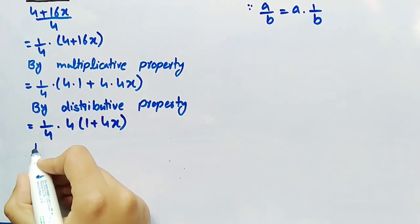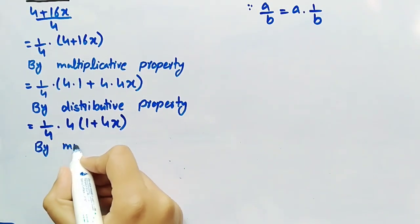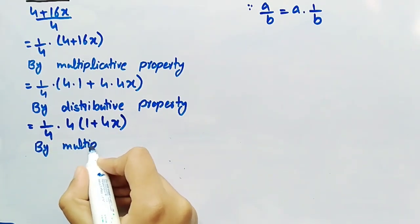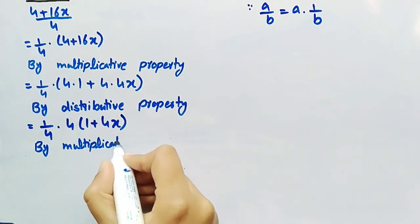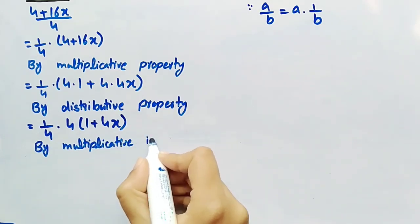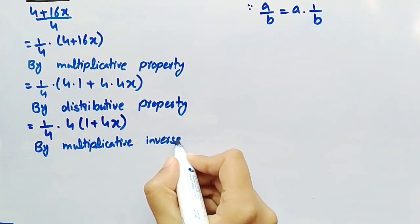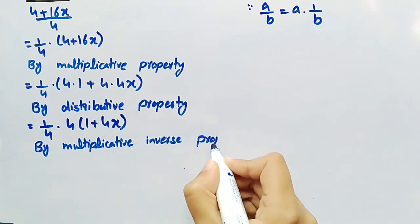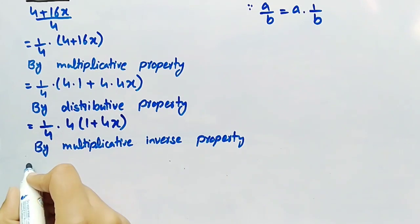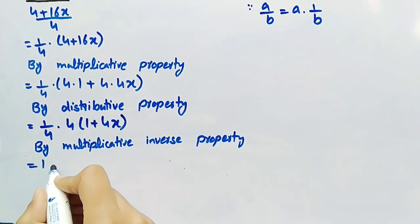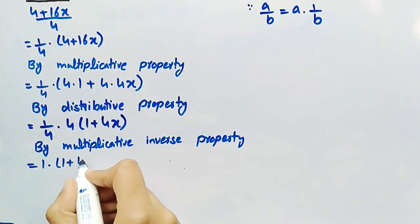Now by using multiplicative inverse property, we get 1 into 1 plus 4x.